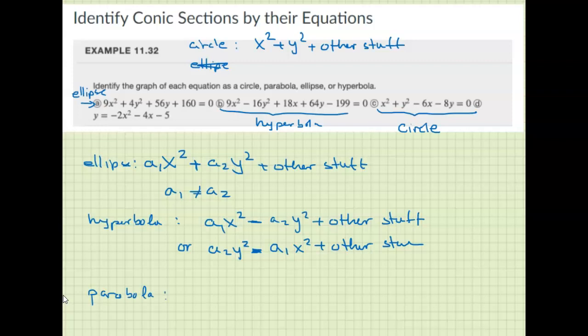Parabola, it's only going to have one of them squared. So you can have a1 x squared plus b y, or a2 y squared plus a1 x. If only one of them is squared, like either x squared or y squared, but the other stuff is not squared, then it's a parabola. You can see that d is a parabola because it has only x squared.